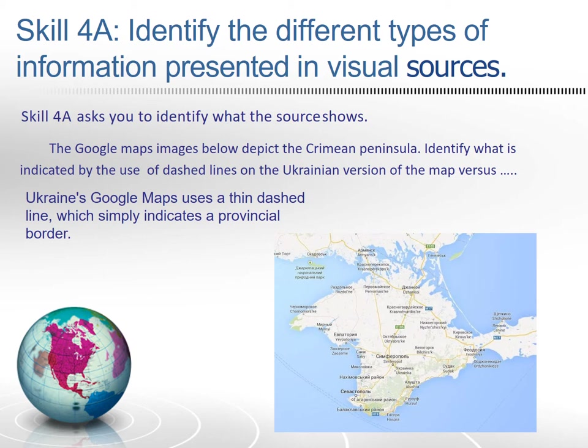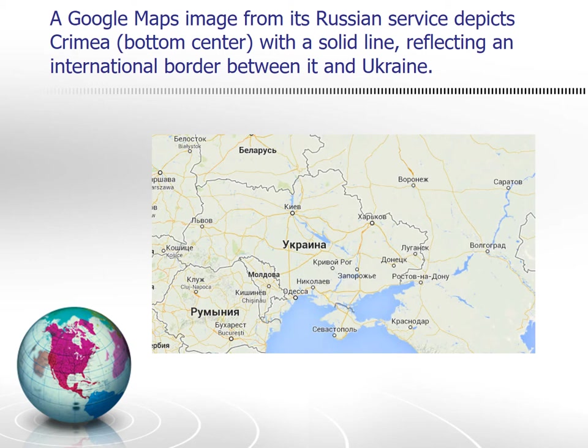Ukraine's Google Maps use a thin dashed line, which simply indicates a provincial border — you can see it in the top center indicating a provincial border of the country of Ukraine. The Russian Google Maps image depicts Crimea in the bottom center with a solid line reflecting an international border between it and Ukraine. So two images showing you basically the same thing, but one has a dashed line showing a provincial boundary.